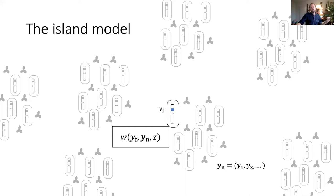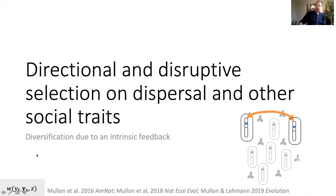Many of the results I will present today can be naturally extended to these cases, bearing some notational and mathematical headaches. The first result I'd like to present concerns the directional and quadratic selection gradients in this island model of dispersal in the absence of extrinsic feedbacks. When published, these results were not entirely new but rather solidified existing results using different methods, which also helped in the interpretation of the different components of selection.